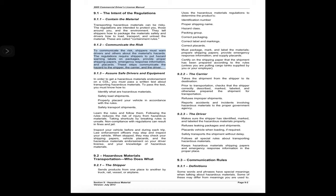9.1.2 Communicate the Risk: To communicate the risk, shippers must warn drivers and others about the materials' hazards. The regulations require shippers to put hazard warning labels on packages, provide proper shipping papers, emergency response information, and placards. These steps communicate the hazard to the shipper, the carrier, and the driver. 9.1.3 Ensure Safe Drivers and Equipment: To get a hazardous materials endorsement on a CDL, you must pass a written test.